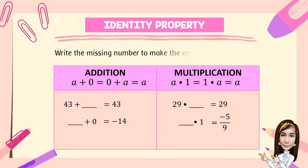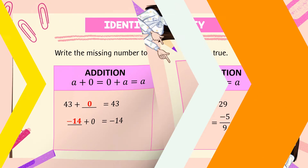Let's try this one. Write the missing number to make the equation true. Using identity property for addition: first, 43 plus blank is equal to 43 — the answer is 0. Second, blank plus 0 is equal to negative 14 — the answer is negative 14 itself. For multiplication: first, 29 times blank is equal to 29 — the answer is 1. Next, blank times 1 is equal to negative 5 over 9 — the answer is negative 5 over 9.